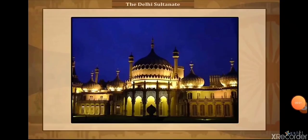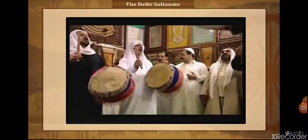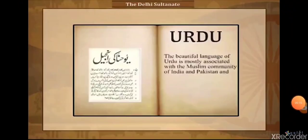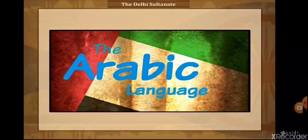During the sultanate period, there was a fusion of cultures resulting in beautiful monuments, literature, music, religion, and clothing. Even the Urdu language was born during this period, as a result of the intermingling of local speakers of Sanskrit and Prakrit with foreigners speaking Persian, Turkish, and Arabic.